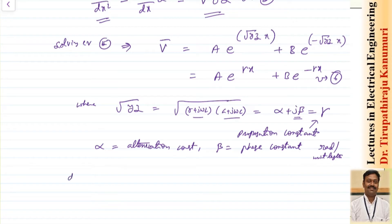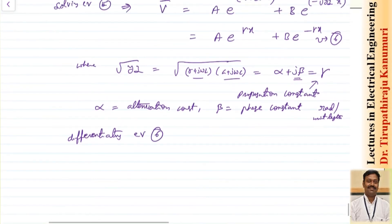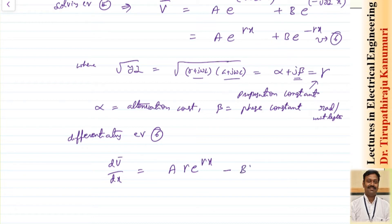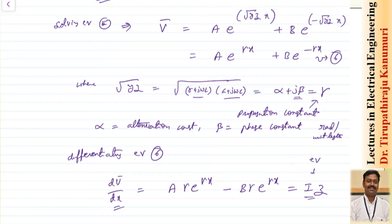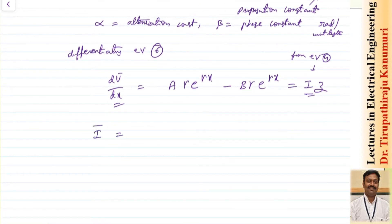Differentiating equation six with respect to x: dv/dx = A·gamma·e^(gamma·x) - B·gamma·e^(-gamma·x). From equation four, dv/dx = i·z, so equating these gives the current i. Defining the characteristic impedance Zc, the current equation becomes i = (1/Zc)·[A·e^(gamma·x) - B·e^(-gamma·x)], which is equation seven.